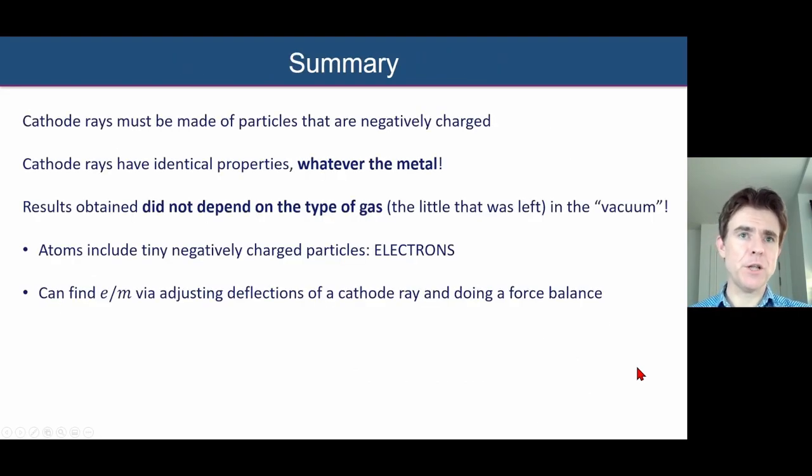So in summary, and I'll give you the value of the charge-to-mass ratio in a second. In summary, cathode rays must be made of particles that are negatively charged based on the way that they moved with electric and B fields. And also the cathode rays have identical properties, whatever the type of metal used for that initial cathode where those rays emanate from. The results also didn't depend on the type of gas in the vacuum tube. And furthermore, then, this led, really, to the understanding of these to be subatomic particles because they were common, whatever the material.